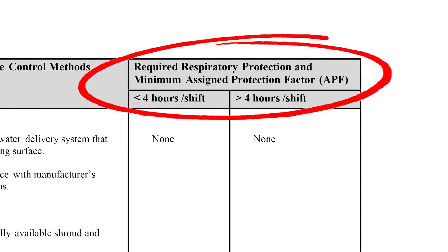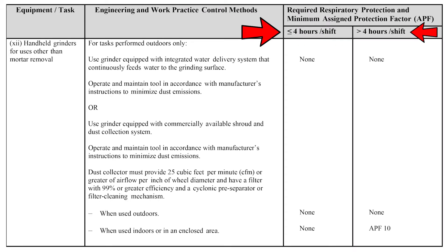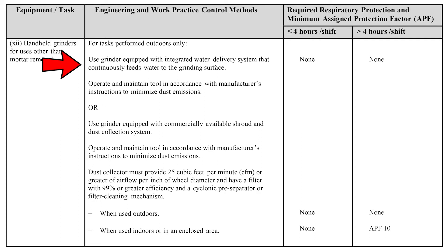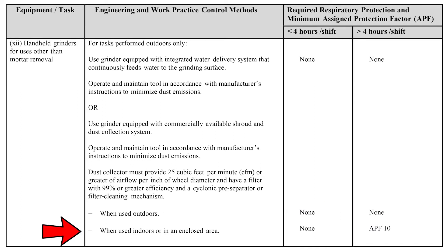The third column lists the required minimum respiratory protection and its minimum assigned protection factor, or APF, for the task, whether it lasts less or more than four hours. If we use the first set of controls — the integrated water system on the grinder outdoors — respirator protection is not necessary. If using the dust collection system outdoors, respiratory protection is also not needed. However, if the task is performed indoors or in an enclosed area for longer than four hours, respiratory protection with an APF of 10 must be provided.